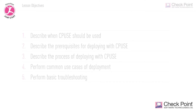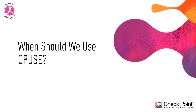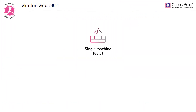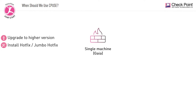When should we use CPUSE? CPUSE should be executed within a single Gaia Check Point machine when you wish to upgrade it to a higher version, install a hotfix or a jumbo hotfix, or when you wish to downgrade a machine to a lower version.